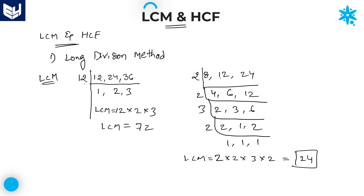24 is the LCM of all three numbers. That is the reason why, when all three numbers are multiples of 12, we can directly take 12. But in this case, 8 is not a multiple of 12, so we cannot divide by 12. Similarly, 8 is not possible because it does not divide 12. You can take 4, since 4 divides 8, 12, and 24. This is the way of doing the long division method for LCM.